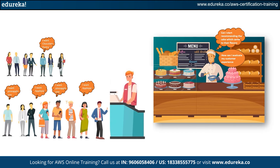As soon as a new data entry arrives in the S3 bucket, AWS Lambda springs into action. It takes the customer's flavor preferences, analyzes them, and selects the perfect cake recipe for that customer. For example, Lambda might choose a recipe for a strawberry delight cake for a customer who loves strawberries — it's like the perfect recipe card handed to you just in time. AWS Lambda runs the code needed to generate these personalized recipe suggestions without you having to worry about maintaining the kitchen or writing complex code. This serverless approach is not only cost-effective but also allows you to focus on what you do best: baking the best cakes. That is the essence of AWS Lambda — your serverless kitchen assistant, always ready to whip up the perfect solution.